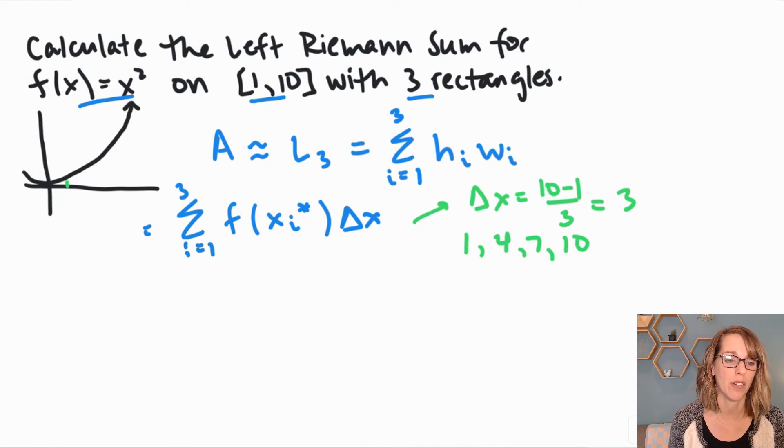Let's go ahead and put that onto our graph. 1, 4, 7 and 10. So I've got 1 there and 10 there.